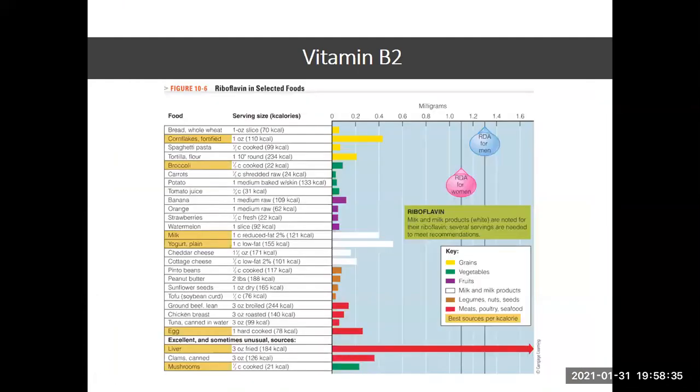Riboflavin, as you can see, is high in dairy products, in eggs, in liver, and also in cereals.